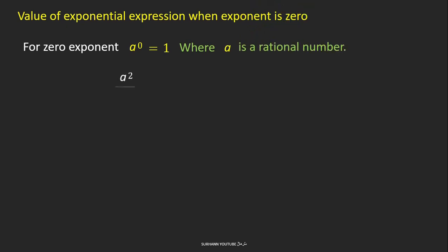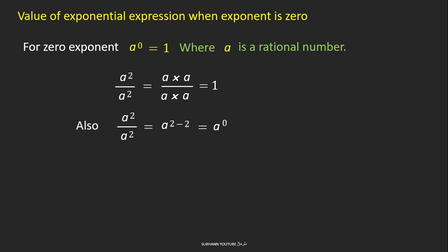To understand this, look at the following example: a to the power 2 divided by a to the power 2. We can write this as a multiplied by a divided by a multiplied by a, and the answer will be 1. If we solve this by the quotient law — a to the power 2 divided by a to the power 2 — we get a to the power 0, because 2 minus 2 is 0. Hence, a to the power 0 is equal to 1.